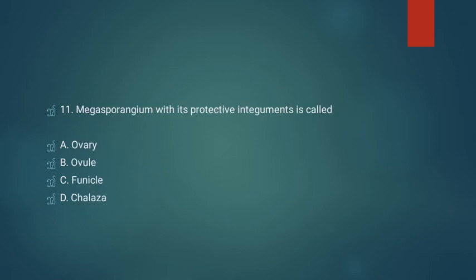Question number eleven: when megasporangium with its protective integument is called. Option A: ovary. Option B: ovule. Option C: funicle. Option D: chalaza. The answer is ovule — option B is correct. Megasporangium with its protective integument is called ovule.